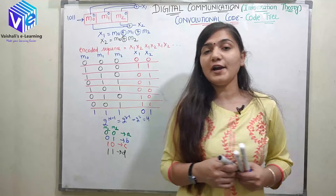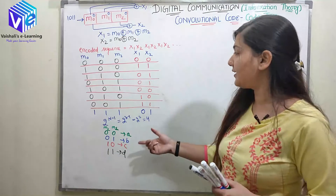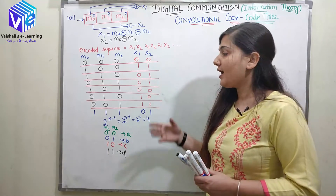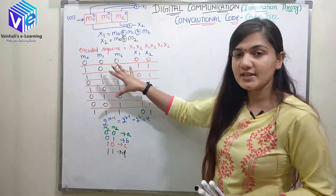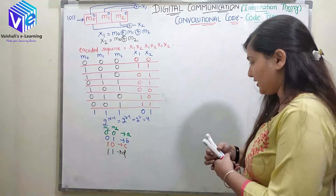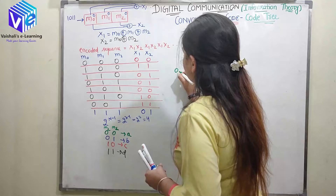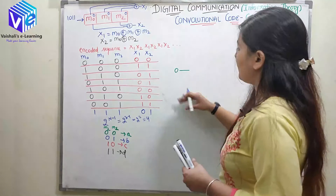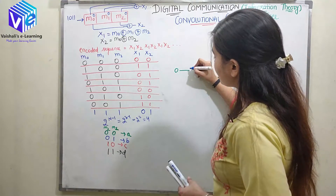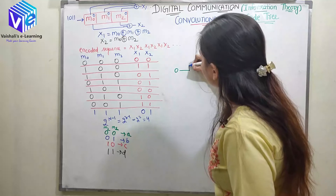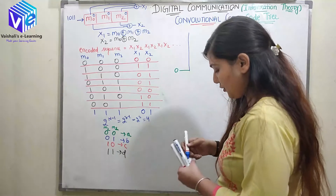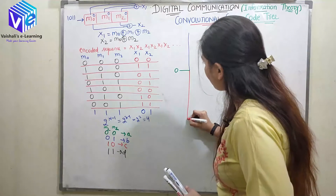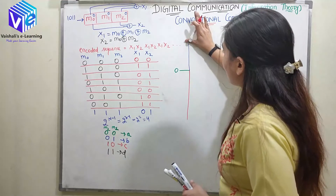In the previous video I showed how to find the code tree of this sequence. Now I'll explain the generalized code tree, and after that we'll derive the code tree for this sequence from the generalized one. We start from 0 input, so all states are 0. The first input could be 0 or 1 — input 0 means moving upward, input 1 means moving downward.